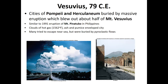One of the most infamous volcanic eruptions in history was the eruption of Mount Vesuvius in 79 CE. Vesuvius is in what is now Italy, across the bay from the city of Naples. The cities of Pompeii and Herculaneum were nearby, and they were buried by a very massive eruption that blew out about half of the mountain itself.